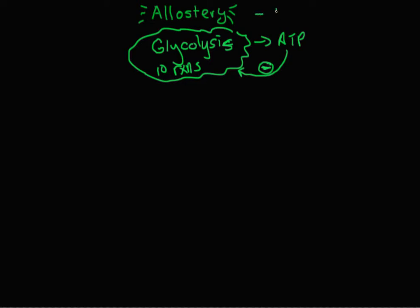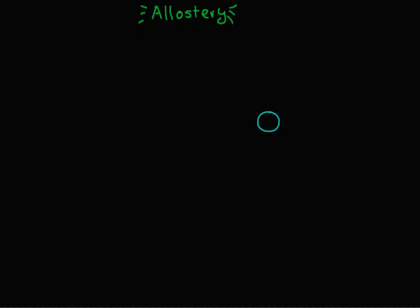Allosteric means 'the other site.' To understand what this means, let's look at an example. When an enzyme — here the enzyme is represented as a circle — an enzyme has an active site and it can bind substrate at the active site to form the enzyme-substrate complex.